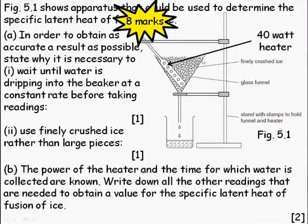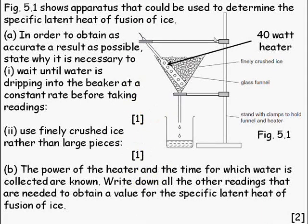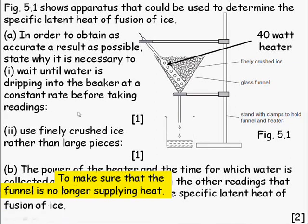Example five is an IGCSE question. Pause the video with eight marks, pause the video, and read this question carefully. State why it is necessary to wait until the water is dripping into the beaker at a constant rate before taking the readings.